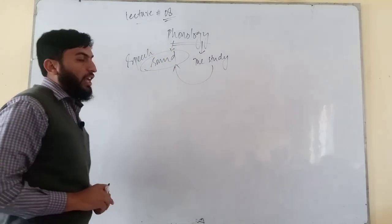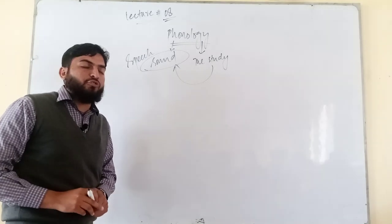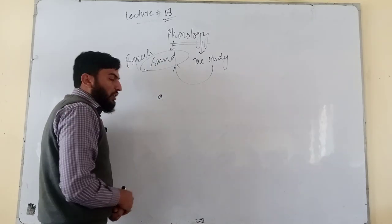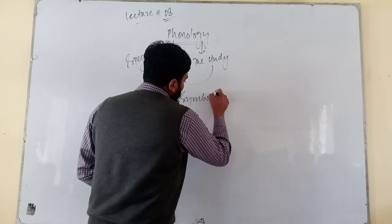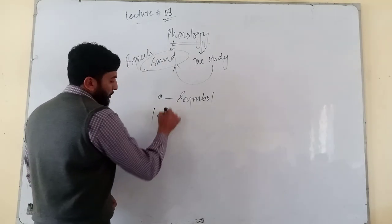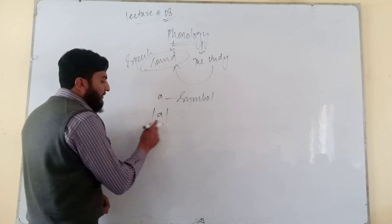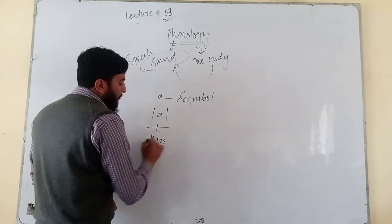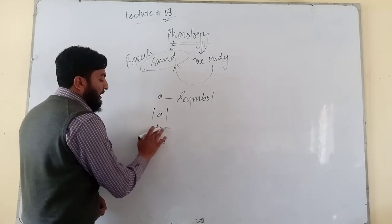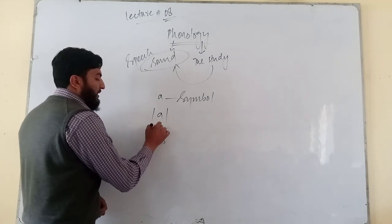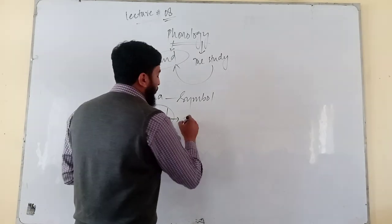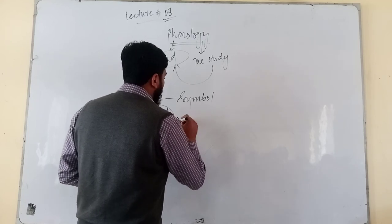When we say the study of speech sounds is called phonology, consider this: when I write A, this is called a symbol. But when I represent the same A sound using two bars, those bars are used for the identification of a sound. So a sound placed between two bars is actually a phonological sound.